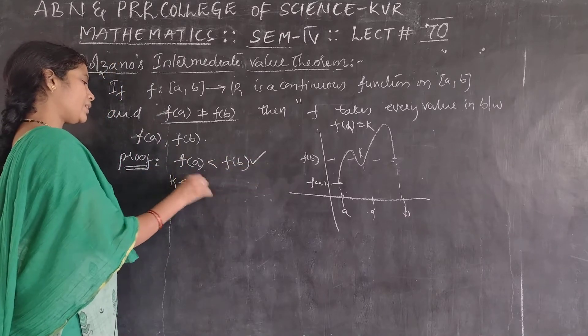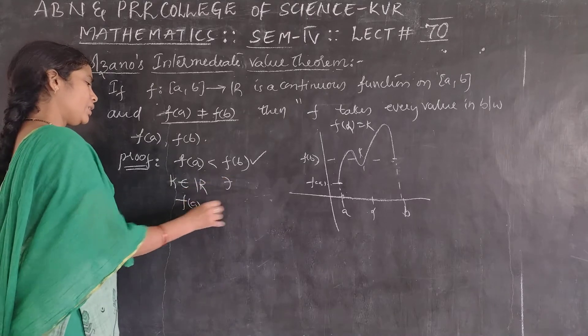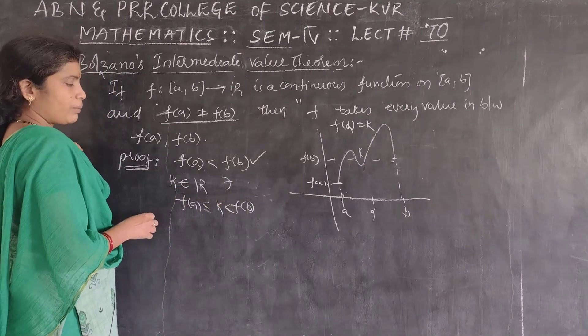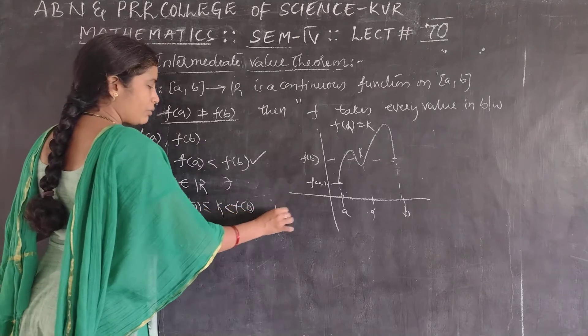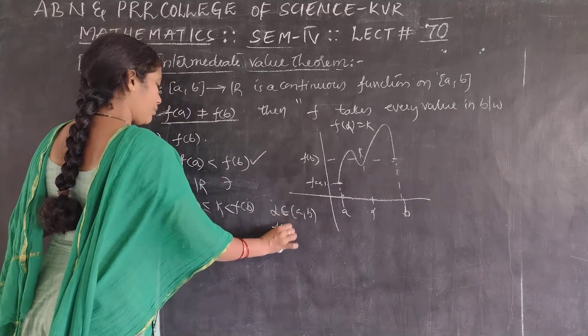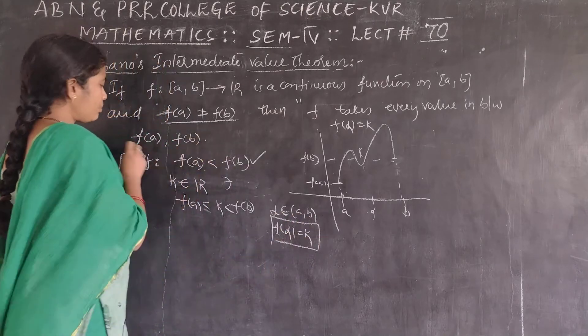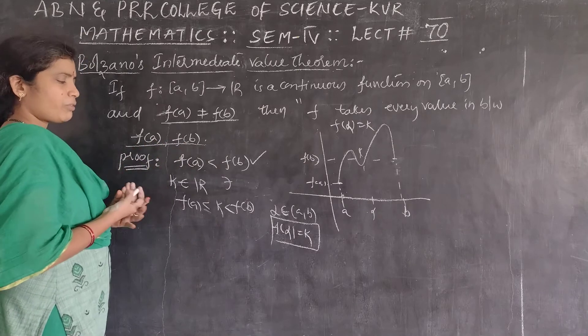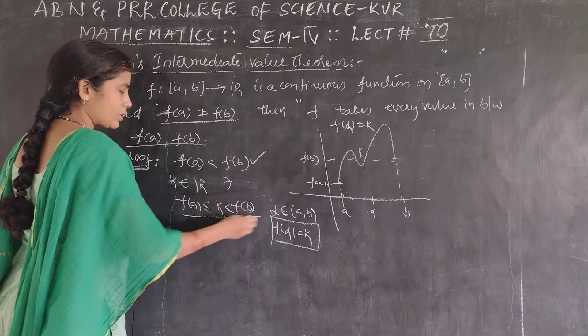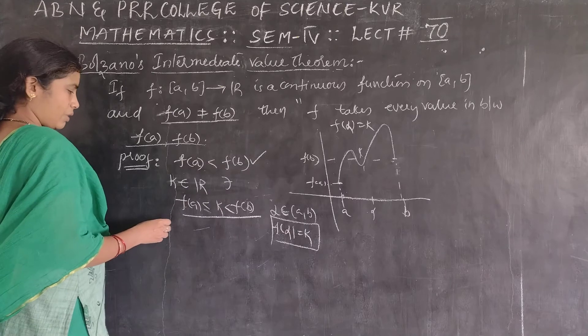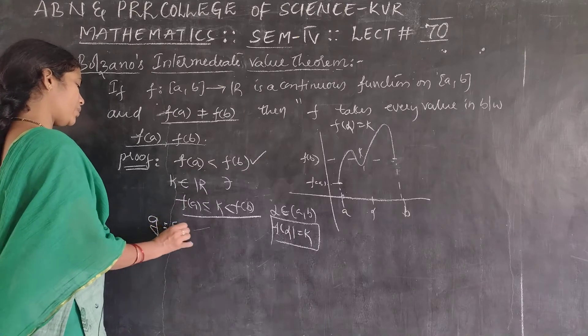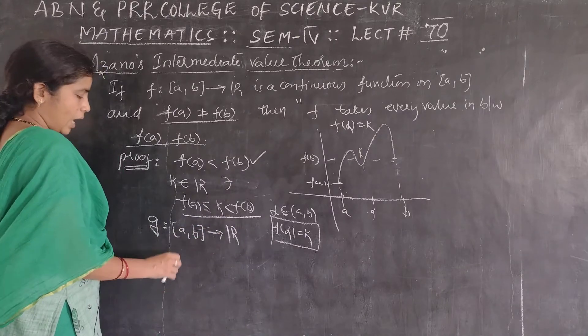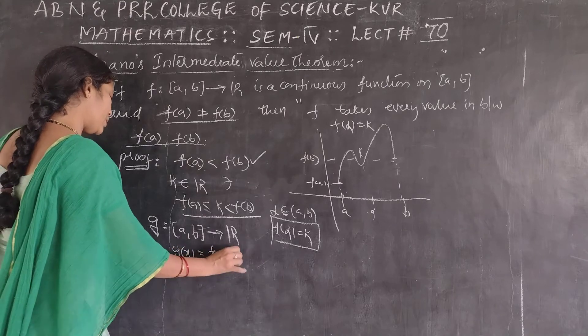Let us consider k is a real number such that it is in between f of a and f of b. Let us consider f of a is less than k is less than f of b. Here we can define this function for our convenience only. Define g from closed AB to R as g of x is equal to f of x minus k.